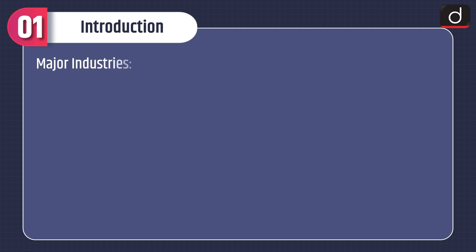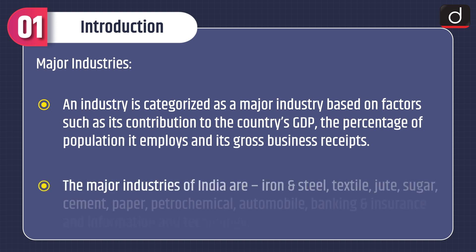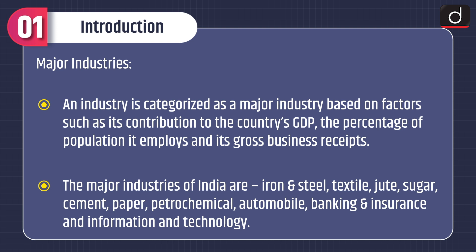Now let's discuss about the major industries. An industry is categorized as a major industry based on factors such as its contribution to the country's GDP, the percentage of population it employs, and its gross business receipts. The major industries of India are iron and steel, textile, jute, sugar, cement, paper, petrochemical, automobile, banking and insurance, and information and technology.